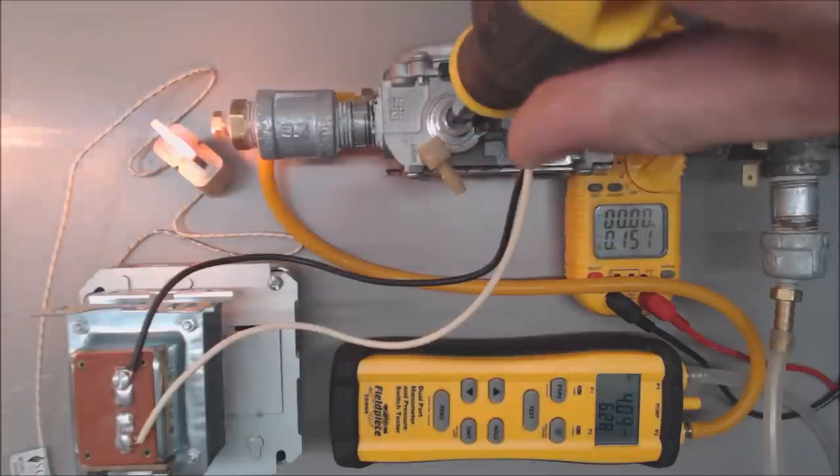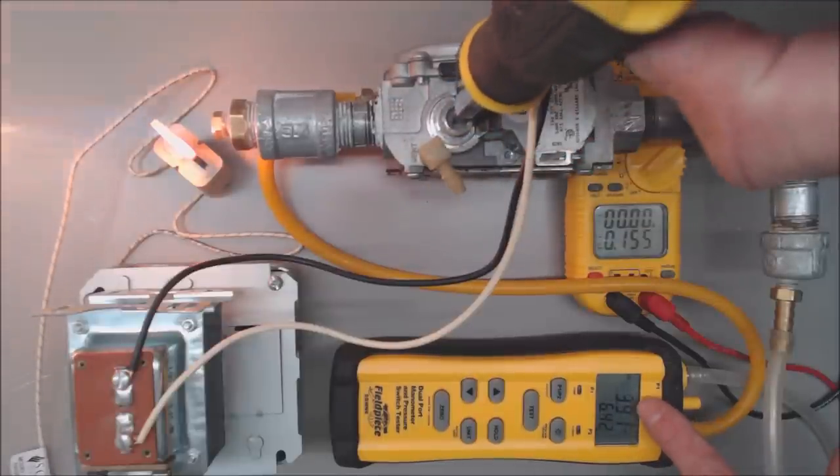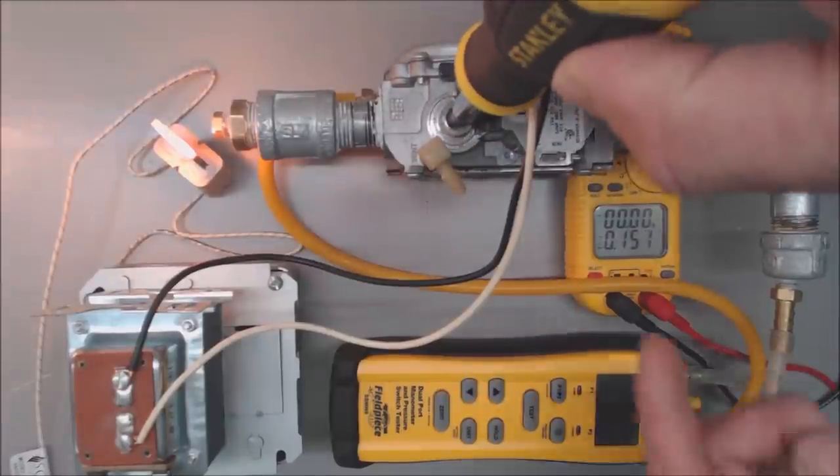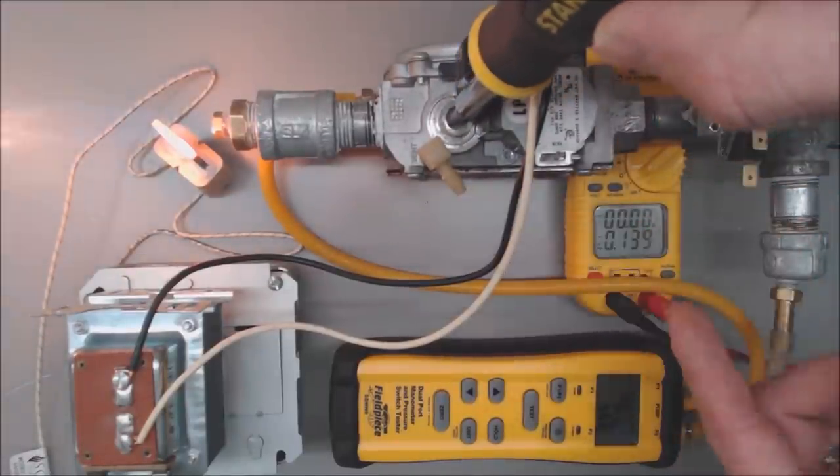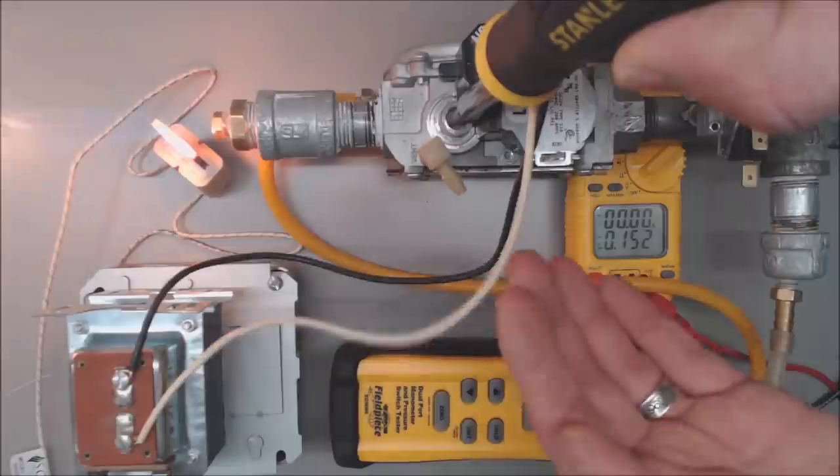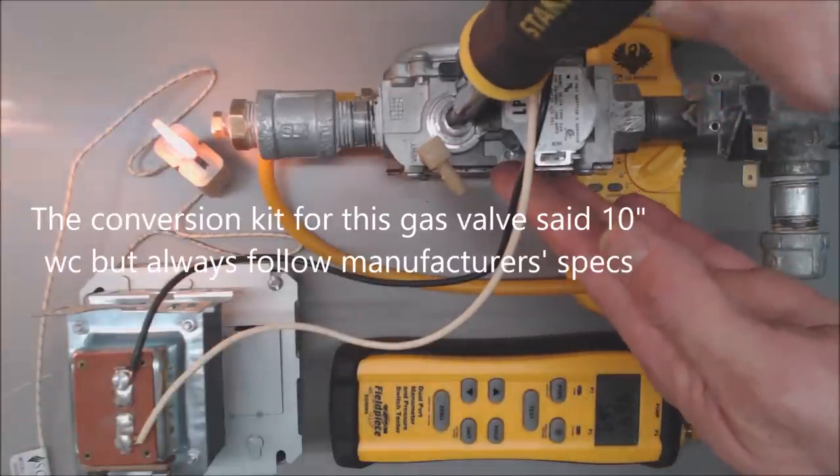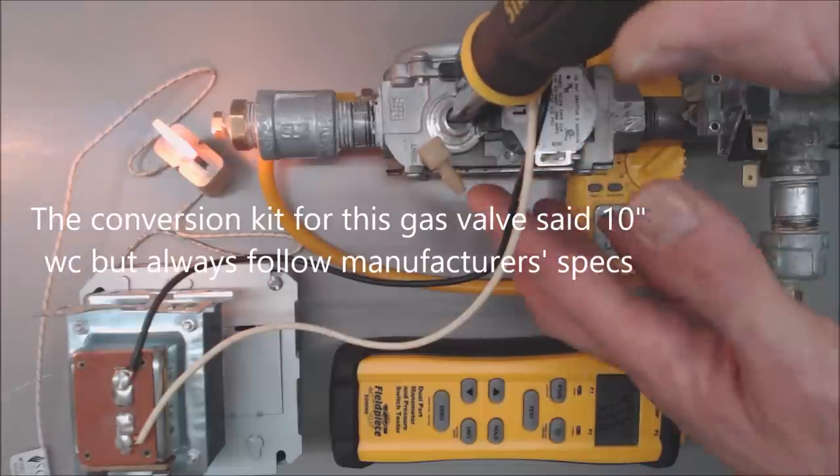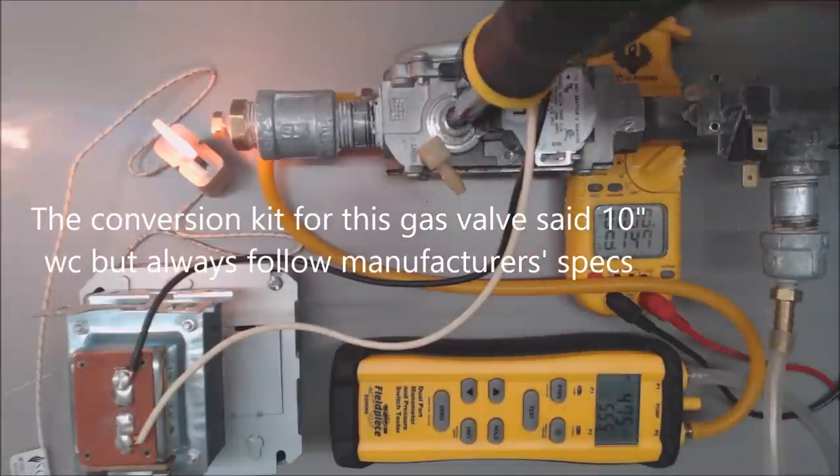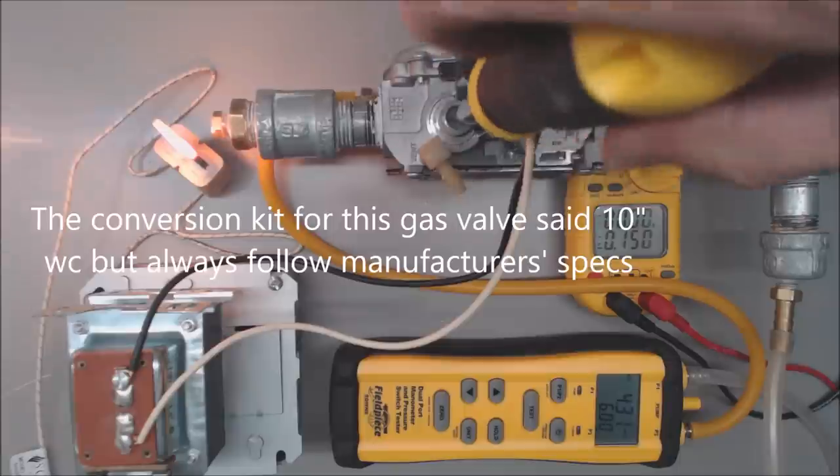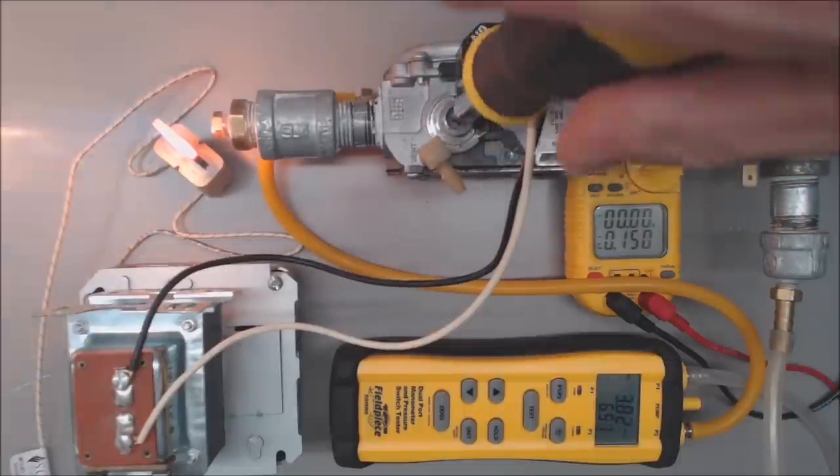If you keep turning it clockwise you're going to increase the water column reading. As you decrease, the reading will follow as well. So you want to turn this clockwise until this reaches 10 inch water column, or basically while you're reading your combustion analysis you want to make sure that you get that as accurate as possible and then set it accordingly very close to 10 inch water column, but based on your combustion analysis. But that's how it's done.